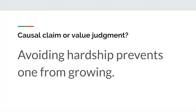Next. Avoiding hardship prevents one from growing. Is this a causal claim or a value judgment? It's a causal claim. There are two variables: avoiding hardship, and what does that do? That leads to preventing one from growing. Notice that the language of 'leading to' or 'causing' isn't present within this particular sentence, but nevertheless it is a cause and effect claim. If something causes something else to stop or to discontinue, then that is still a cause and effect relationship. Avoiding hardship is preventing one from growing — you can see the cause and effect between the X variable of avoiding hardship and the Y variable of preventing one from growing.